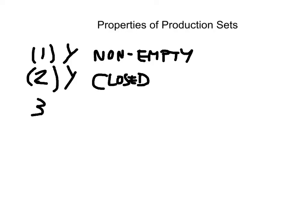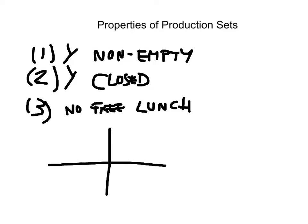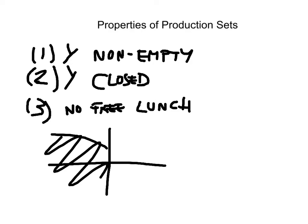The third property is that there is no free lunch — you cannot produce something from nothing. What would violate this requirement? Something like this: a production set maybe that looks like this. You can see that at that point you're producing output with zero input, but this is precisely what's being precluded.